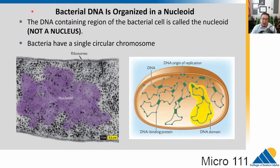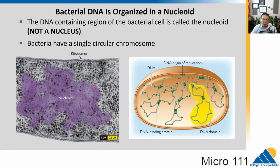Bacteria have a single circular chromosome of DNA. It's a long piece arranged in a circle, but there are DNA-binding proteins that help wind up and package the DNA to keep it organized. We have a region where all that DNA is organized called the nucleoid region — it's not bound by a membrane, so it's not a nucleus. Outside of that, you can see in this electron micrograph all these little black spots, which are ribosomes used to take mRNA and turn it into protein.